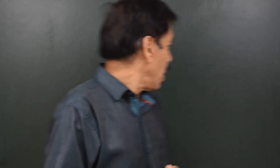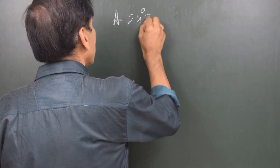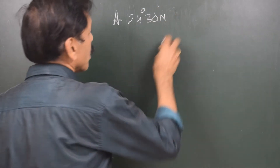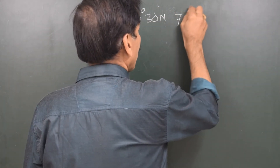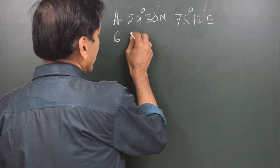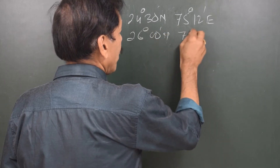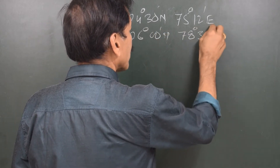Let us talk about a situation where you have to go from place A to place B, and let us see what kind of calculations can be done to find out the course and distance by plane sailing. Let us say the latitude of A is 24° 30' N, 75° 12' E, and the position of B is 26° 00' N, 78° 30' E.